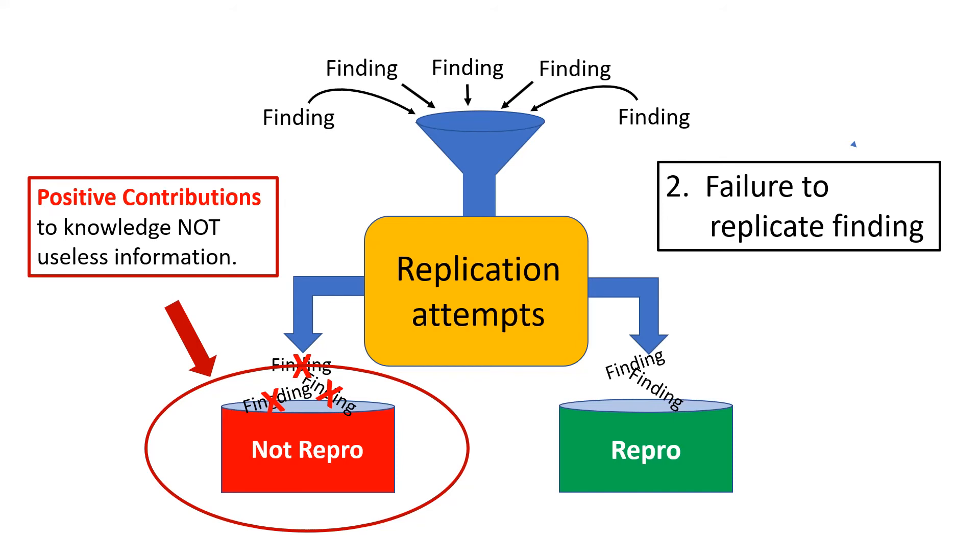However, this is a little bit different kind of knowledge than we got from testing hypotheses. The knowledge that we gain in a failed replication attempt is that there is something different about nature. Something is more complicated than we thought. There's some difference between the first experiment that was published and the second replication attempt. But once again, a rigorous attempt and failure of replication is not useless information.